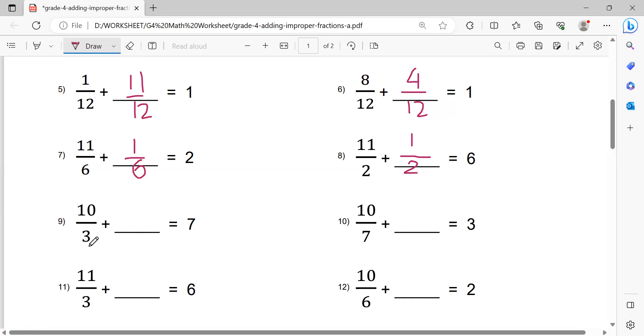Number 9. 3 times 7 equals 21. 21 minus 10 equals 11. 11 over 3.